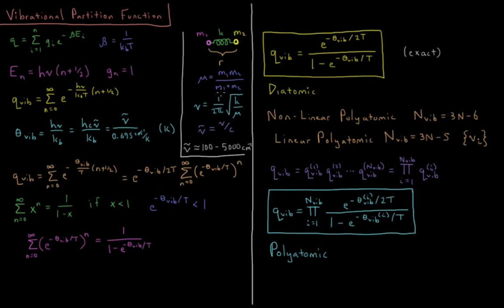Nu bar is 1 over 2 pi times the speed of light times square root of k over mu, or nu bar equals nu over c, where in wavenumbers the typical values that you'll see for vibrational constants is around 100 to 5,000 wavenumbers. Note that the rotational constants, which are typical, are about 1 to 10 wavenumbers, whereas the typical vibrational constants are around 100 to 5,000 wavenumbers.